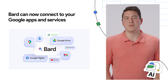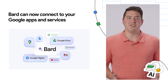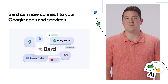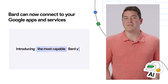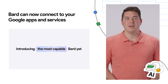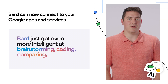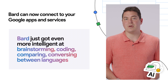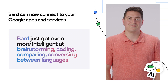BARD can now connect to Google Apps and Services, which means it's able to pull from data in Gmail, Drive, Docs, Google Maps, and YouTube. Imagine applying for a new job — you can use BARD to find your previous resume from Drive and continue to collaborate on a new cover letter in Docs.